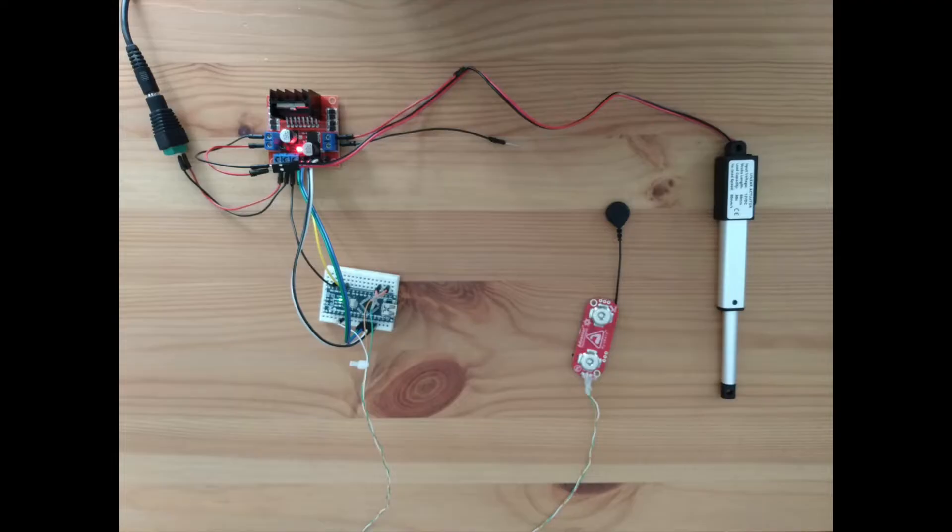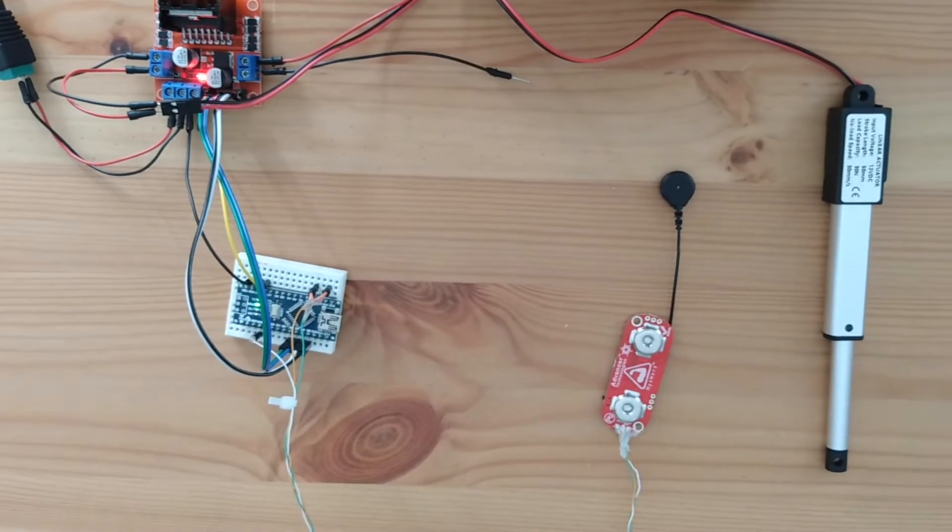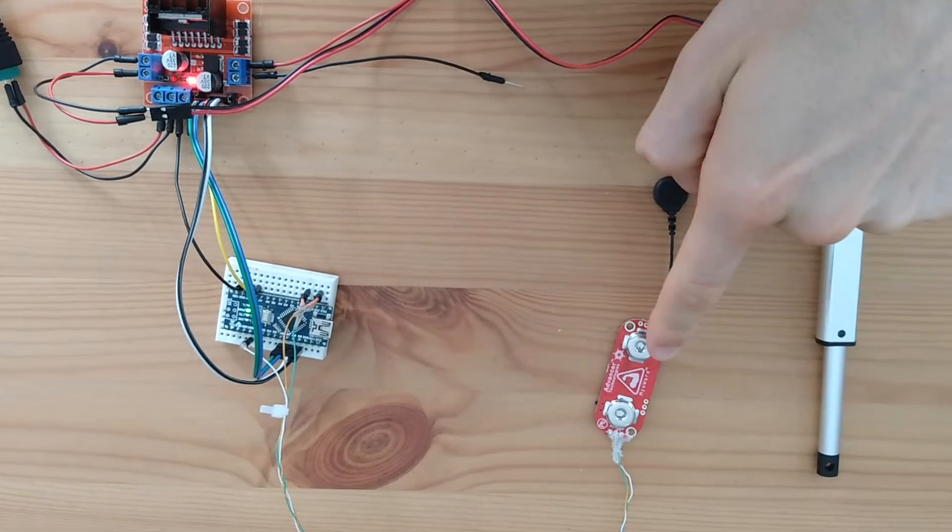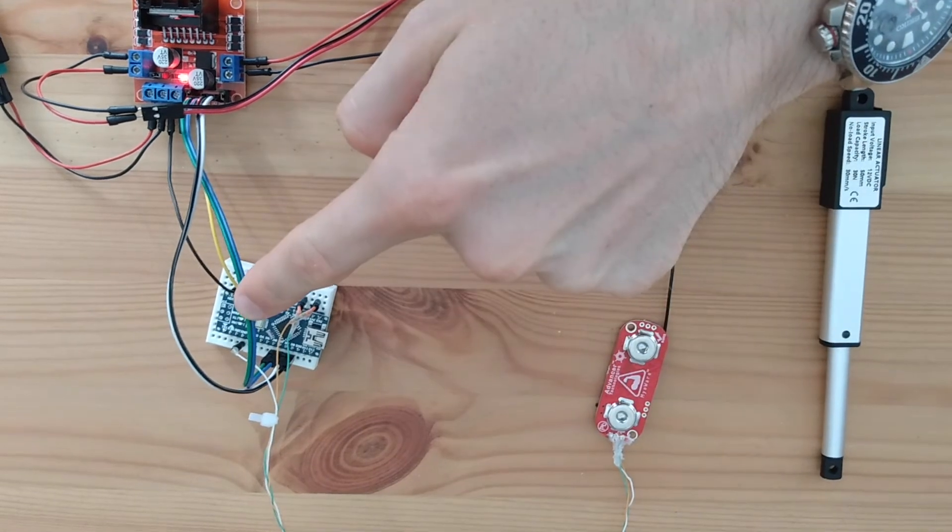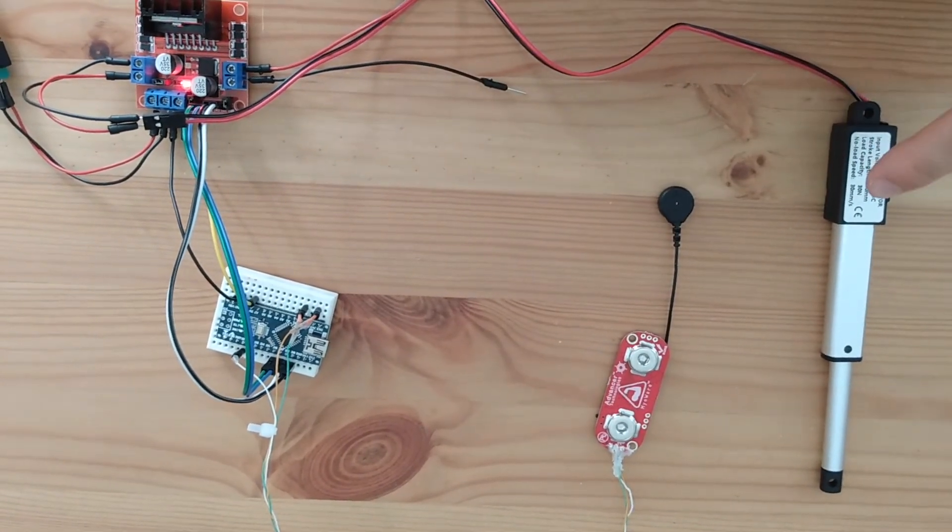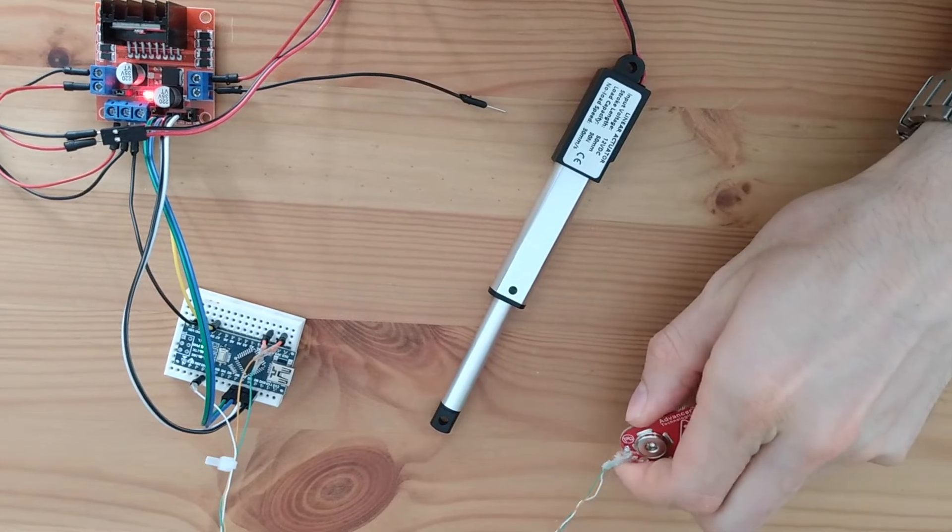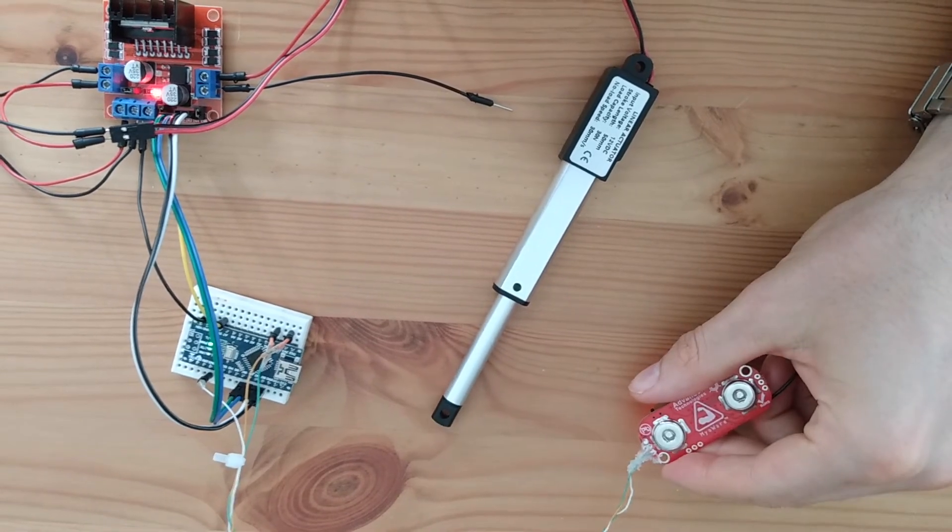Let's quickly run through the electronics. Remember that we want this hand to be controlled with muscle signals like we saw in part 2 of this project. The muscle sensor here sends signals to the microprocessor, which is programmed to send a signal to the motor controller when the sensor is activated. If I manually trigger the muscle sensor, we see the linear actuator moves.